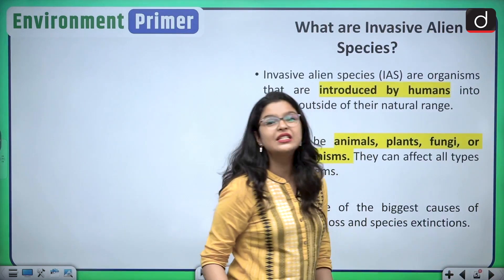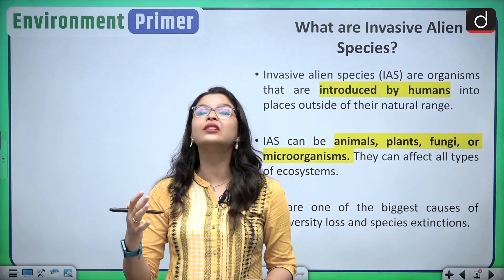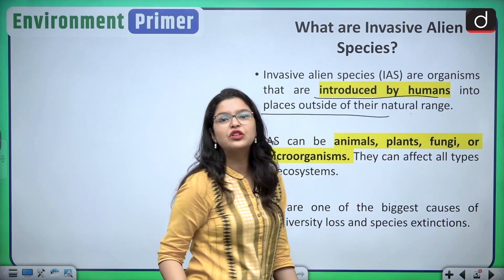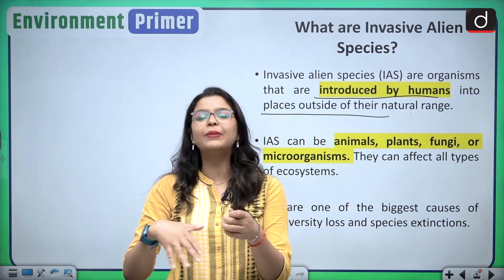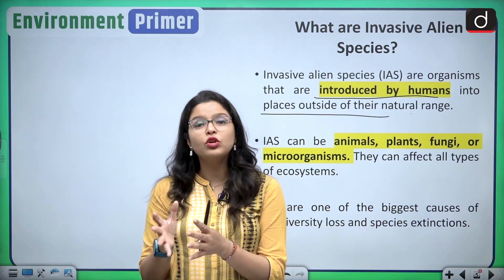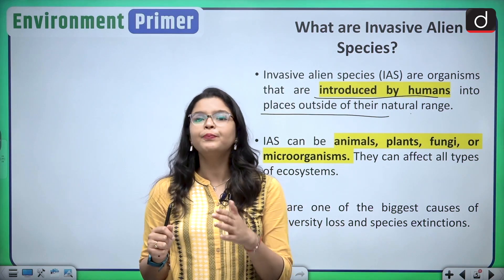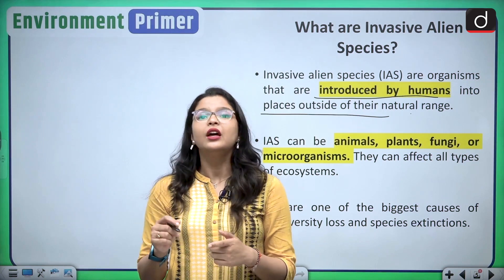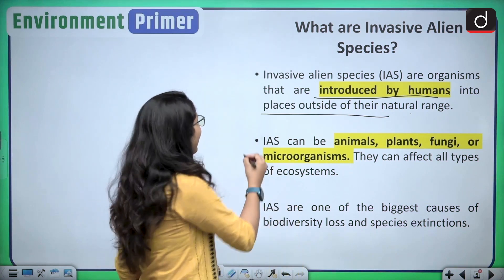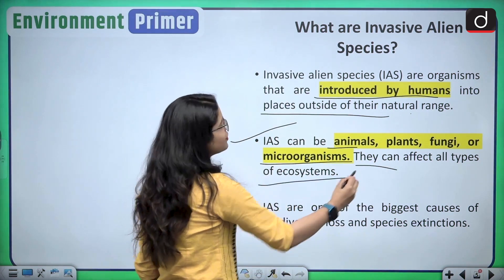Invasive alien species are invasive non-native species — they are not naturally occurring species. They are introduced by humans into places outside of their natural range, and they start multiplying in population, thereby threatening the native population or the native ecosystem of that area. They are invasive exotic or non-native species introduced by human activities. These species can be animals, plants, fungi, or microorganisms, and they can affect all types of ecosystems.